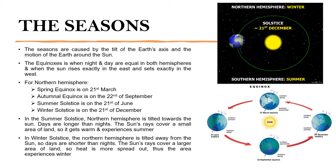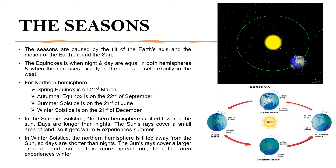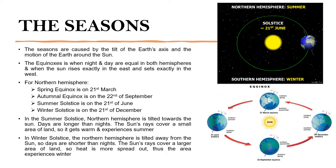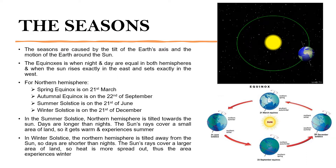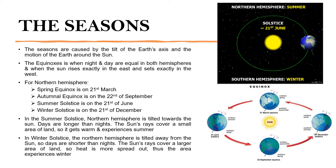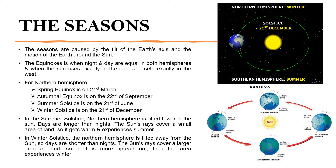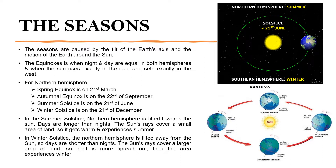The equinoxes is when the night and day are equal in both hemispheres and when the Sun rises exactly in the east and sets exactly in the west. For the Northern Hemisphere, the Spring equinox is on the 21st of March, Autumnal equinox is on the 22nd of September, Summer solstice is on the 21st of June, and Winter solstice is on the 21st of December.